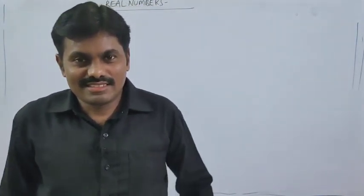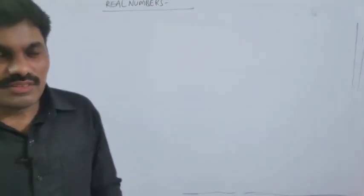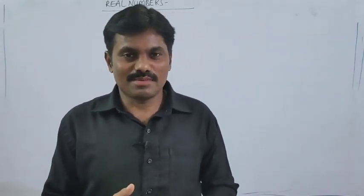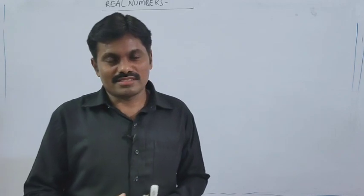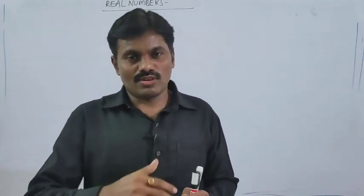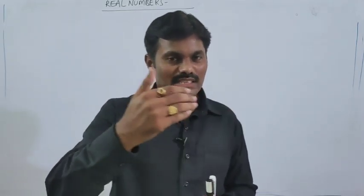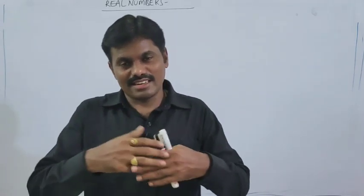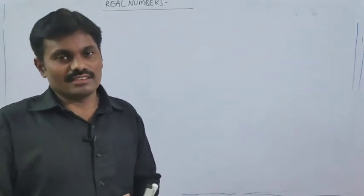Welcome to Real Numbers. In previous classes we studied about what is the set of real numbers. The collection of rational and irrational numbers is called the set of real numbers. We discussed properties of real numbers: numbers which can be expressed in the form of p by q are called rational numbers, and numbers which cannot be expressed in the form of p by q are called irrational numbers. The collection of these two is called real numbers.